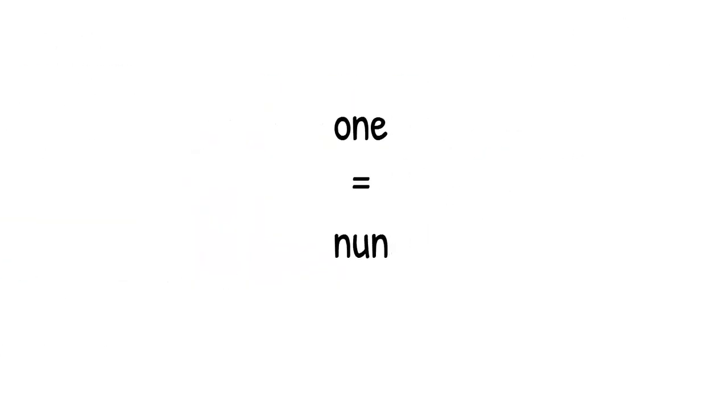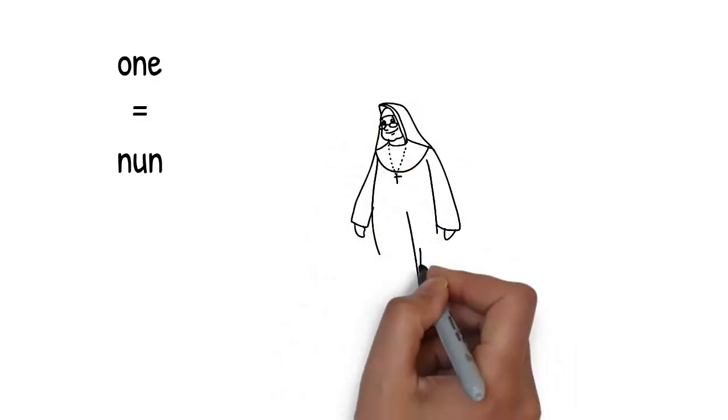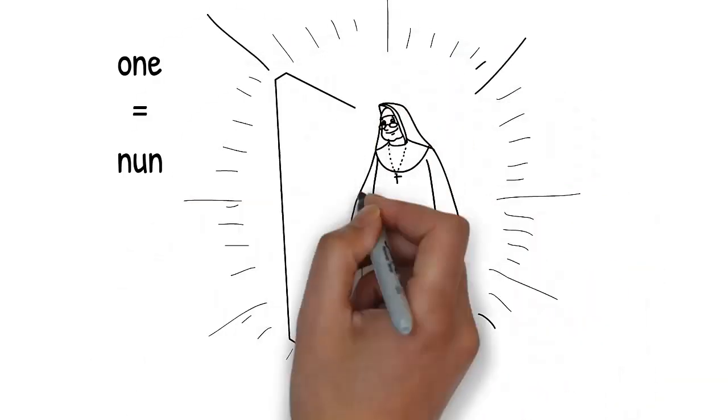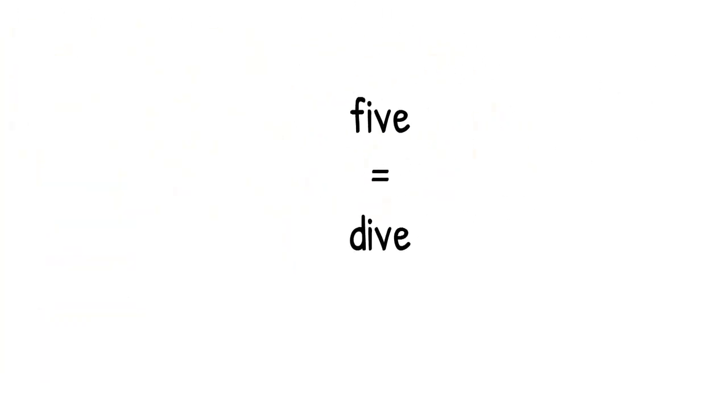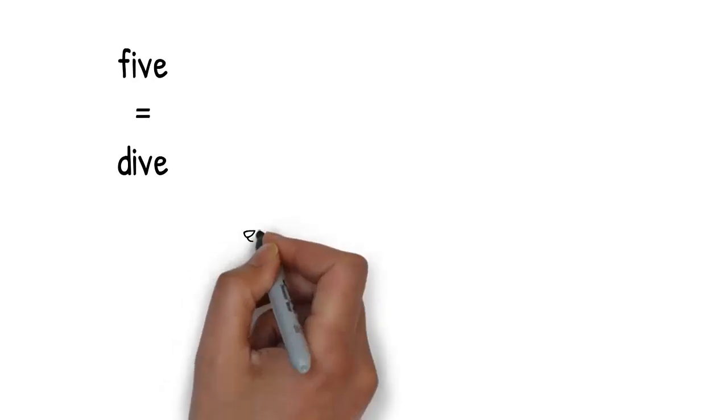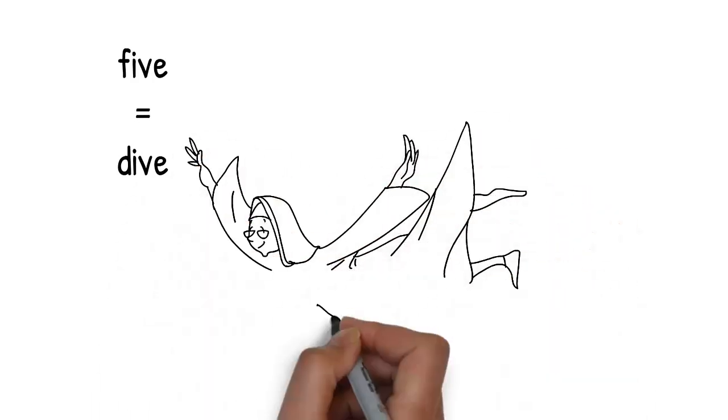After swatting the gun away, the door opens and a nun walks out, dressed in a traditional black and white habit. Nun rhymes with one. The nun runs a few steps and takes a big dive through the air. Dive rhymes with five.